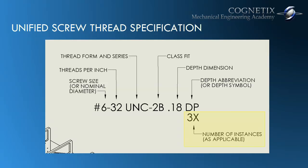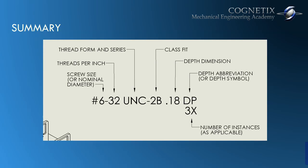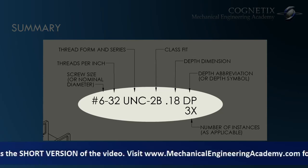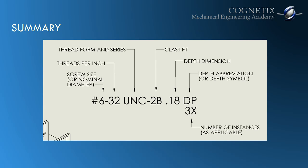Here are three examples of the exact same thread with the number of instances expressed in different ways. In summary, to fully define a threaded feature on an engineering drawing, we list the screw size or nominal diameter, the pitch, the thread form and series along with the class fit, the depth or length of the threaded feature and a symbol to go along with that, as well as the number of instances of that threaded feature. That concludes our video tutorial on how to specify screw threads on engineering drawings based on the Unified Inch Screw Thread Standard.